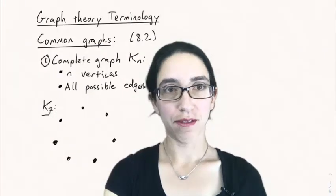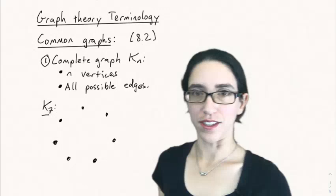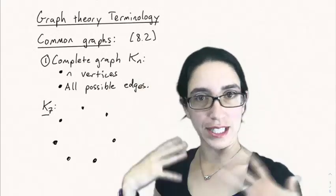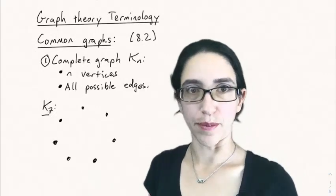Hello and welcome back to Math Theory 01, Combinatorics at CSU. Today we're going to be talking about graph theory terminology, some basic terminology that comes up in graph theory. So we're going to start with section 8.2, which is just listing some common graphs and what their names are and where they come up.